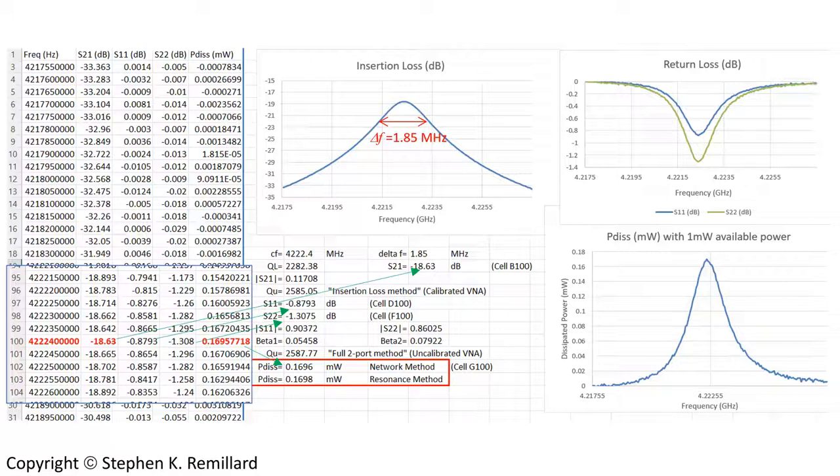This is just one exercise to benchmark the two methods that I've always relied on to give dissipated power. Hopefully now you can calculate the dissipated power from your S-parameter data. This applies to a two-port passive network. And that resonance method applies when it's undercoupled.